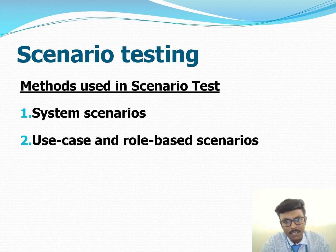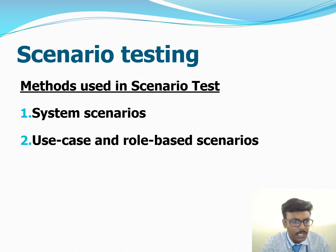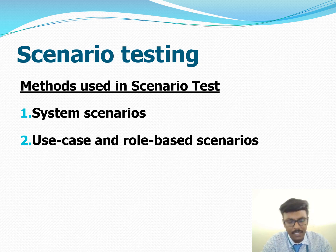The methods used in scenario testing are system scenarios, use case scenarios, and role-based scenarios. In the system scenarios method, only those sets of realistic user activities that cover several components in the system are used as a scenario test — for example, storylines, state transitions, and business verticals.